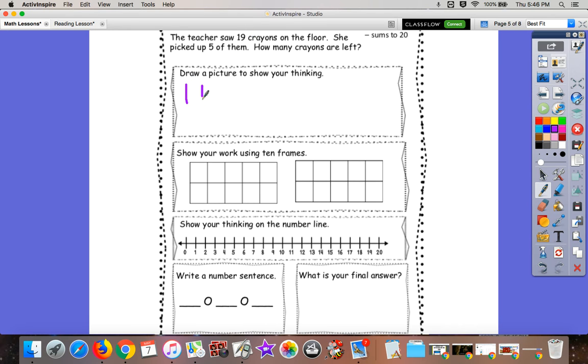So first we started with 19 crayons. So 1, 2, 3, 4, 5, 6, 7, 8, 9, 10, 11, 12, 13, 14, 15, 16, 17, 18, 19. So there were 19 crayons on the floor.